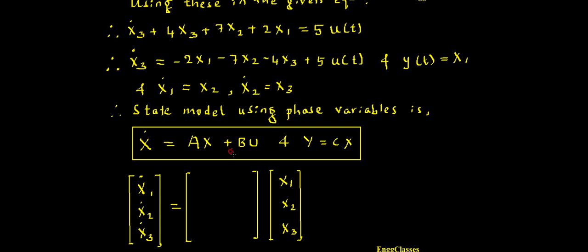So the first row of A must be [0, 1, 0], because 0×X1 + 1×X2 + 0×X3 gives X1-dot = X2. Next, X2-dot equals X3, so the second row must be [0, 0, 1], because 0×X1 + 0×X2 + 1×X3 gives X2-dot = X3.